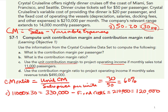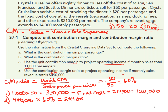Part D uses the contribution margin ratio to project operating income. If monthly sales revenue equals $490,000, we use the contribution margin ratio to calculate operating income. We take $490,000 in total sales revenue and multiply by our 60% contribution margin ratio — $490,000 times 60% equals $294,000 in contribution margin. Then we subtract fixed costs of $210,000, giving us operating income of $84,000.